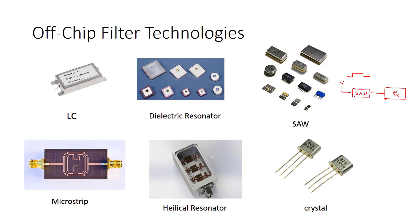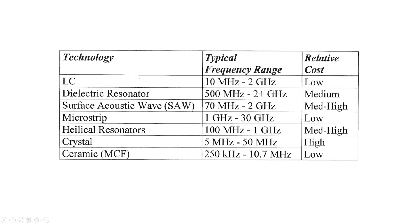We can show some of these filters here with the frequency range. As you see, the highest frequency range belongs to microstrip and also with a low cost. So microstrip is really good technology that we can use for filtering high frequency signals.